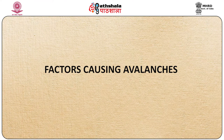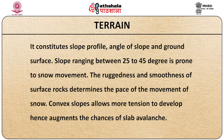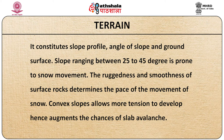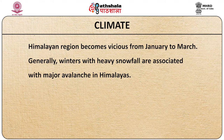The factors causing avalanches include: Terrain, which constitutes slope profile, angle of slope and ground surface. Slopes ranging between 25 to 45 degrees are prone to snow movement. Ruggedness and smoothness of surface rocks determines the pace of snow movement. Convex slopes allow more tension to develop, augmenting the chances of slab avalanche. Climate: excessive snowfall can cause very rapid snow buildup and unstable conditions. Sudden changes in temperature, wind speed and direction may also influence stability of the snow pack. The Himalayan region becomes hazardous from January to March, with heavy snowfall associated with major avalanches.